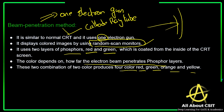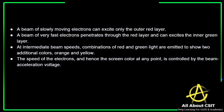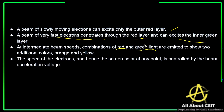Whenever the beam penetrates the CRT screen coated with red and green phosphorus, the two color combinations produce four colors: red, green, orange, and yellow. A beam of slowly moving electrons excites only the outer red layer. A beam of very fast electrons penetrates through the red layer and excites the inner green layer. At an intermediate beam speed, a combination of red and green light is emitted to show two additional colors: orange and yellow. That's why four colors are produced with only one electron gun.